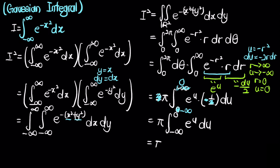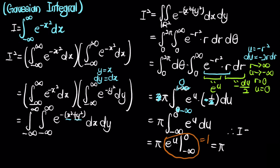This equals π times e to the u evaluated from negative infinity to 0. Evaluating at negative infinity gives 0, and evaluating at 0 gives 1, so the whole thing equals 1. Therefore i squared equals π, which tells us that i equals the square root of π — which is indeed the famous result. So we are done.